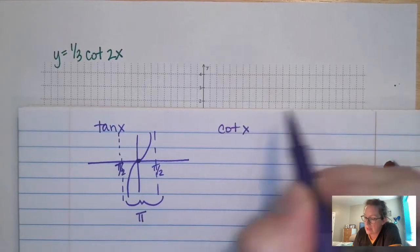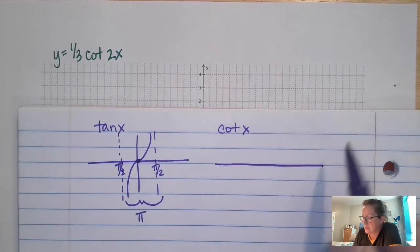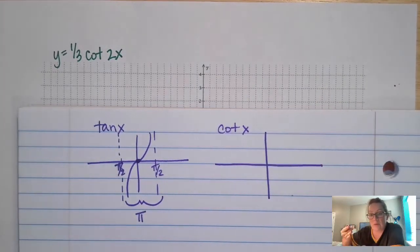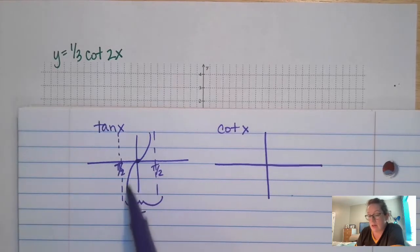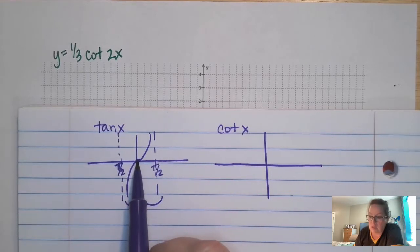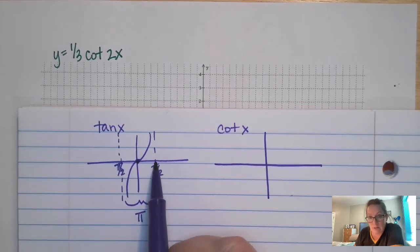Cotangent looks like this, but of course there has to be some changes. So cotangent is going to be flipped over the x-axis, so it's going to be looking like a cotangent negative, and it's shifted 90 degrees. So where a zero is, it's going to be an asymptote. Where an asymptote is, it's a zero.